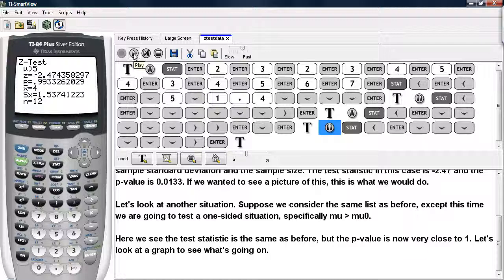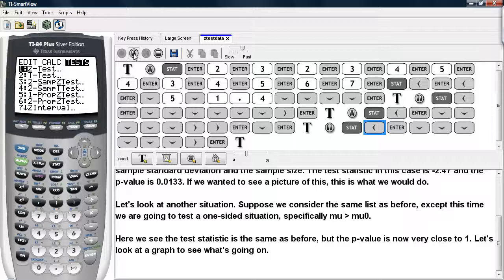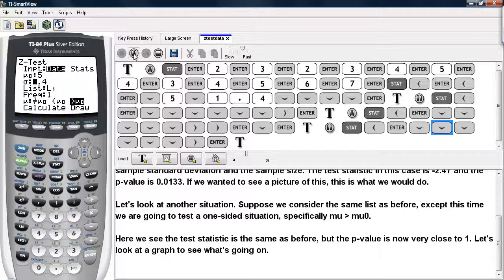So if you want to see what's going on with this situation, as far as a picture goes, we can do that. You hit Stat, and highlight Tests, select Z Test, and just scroll down until you get to the Draw option.